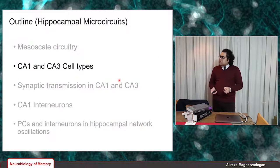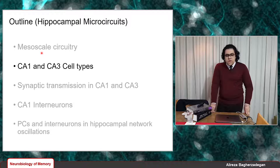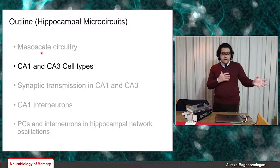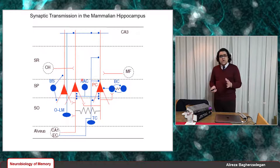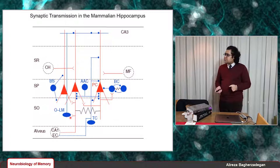Now let's talk about the common cell types identified in CA3 and CA1 microcircuits. As I mentioned in previous lectures, identifying individual cell types and their morphological and electrophysiological properties is one of the very first steps in any microcircuit study. Here you can see a simplified model proposed for microcircuits in CA3, with some common cell types that have been identified in CA3 and also in CA1 microcircuits.